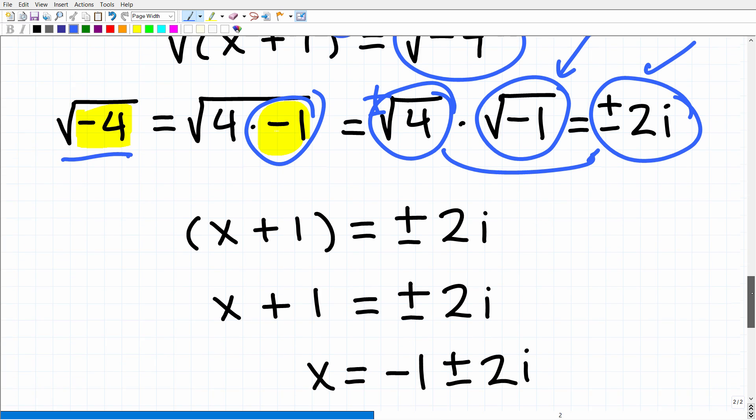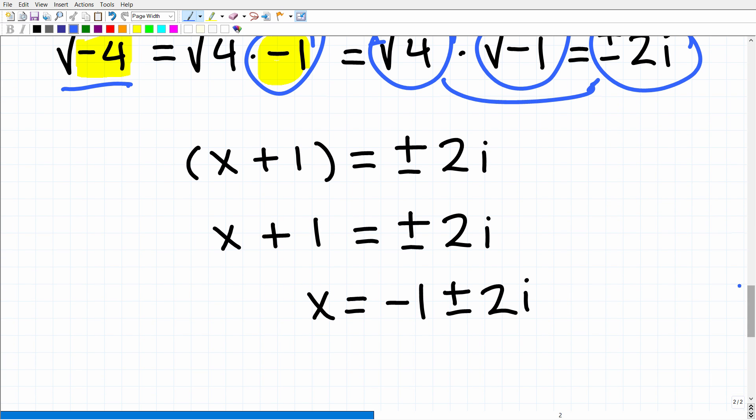Okay, so now that we've taken the square root of both sides, we have x + 1 equals plus or minus 2i. So we can solve for x by simply subtracting 1 from both sides of the equation.